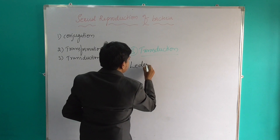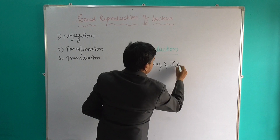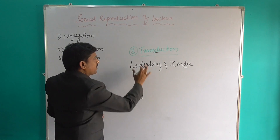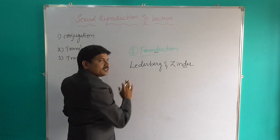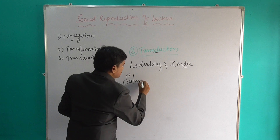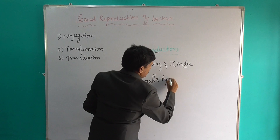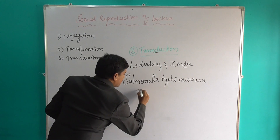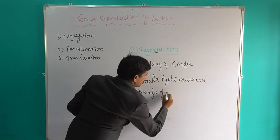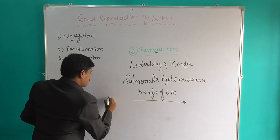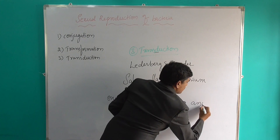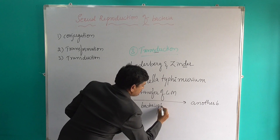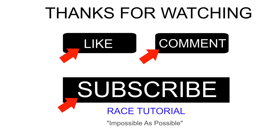The third type is transduction. Transduction was proposed by Lederberg and Zinder in Salmonella typhimurium bacteria. Transduction is defined as the transfer of genetic material from one bacterium to another bacterium through a bacteriophage. Please like, comment, and subscribe to this video.